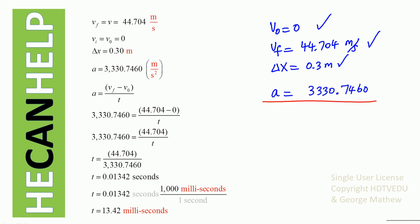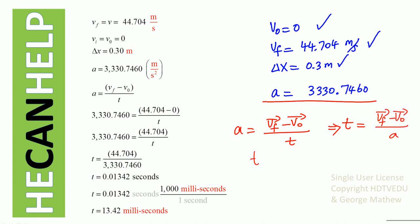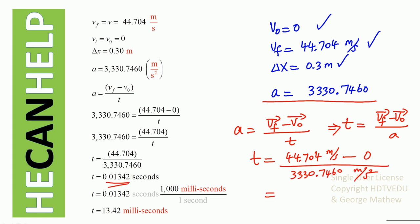Now for Part B — what is the time? Acceleration equals (final velocity minus initial velocity) divided by time, so time equals final velocity divided by acceleration. Time equals 44.704 meters per second minus zero, divided by 3330.7460, which equals 0.01342 seconds.